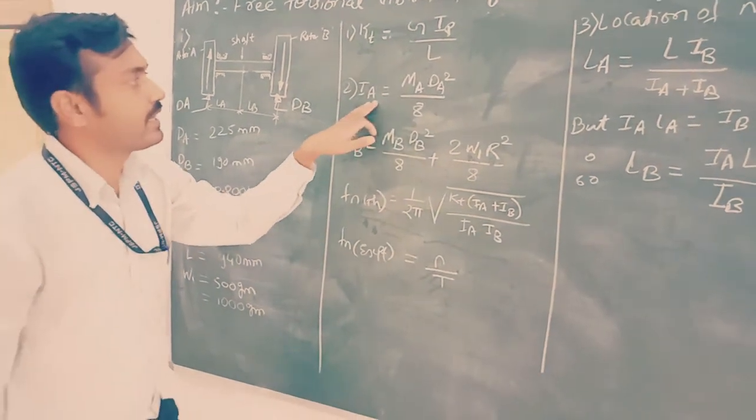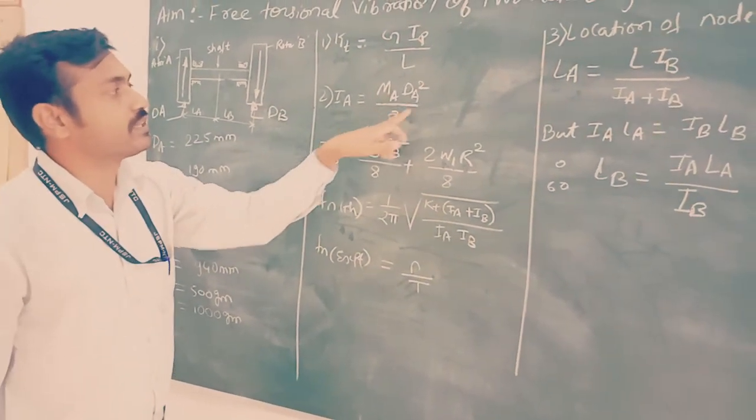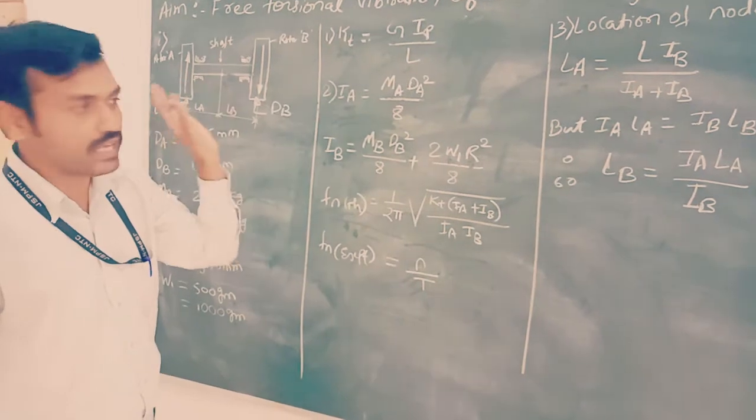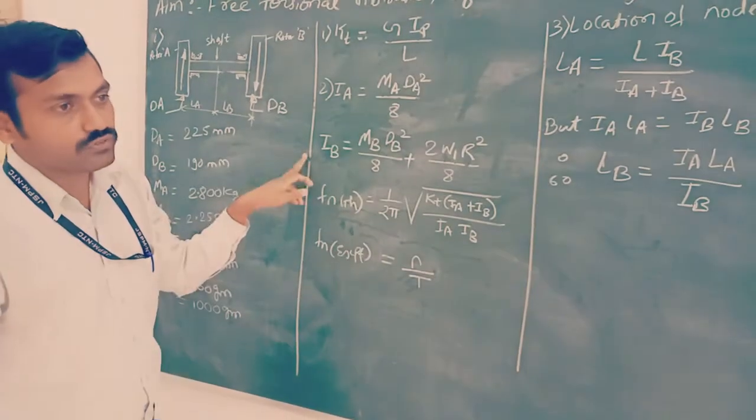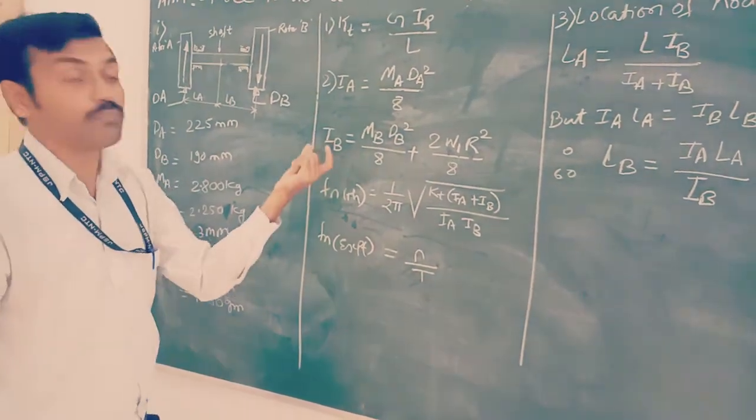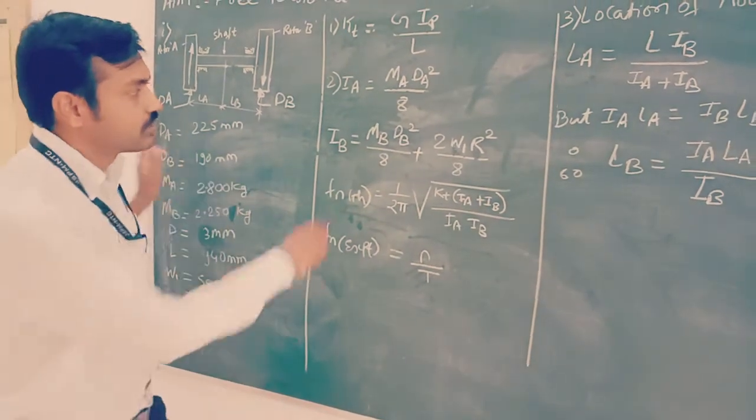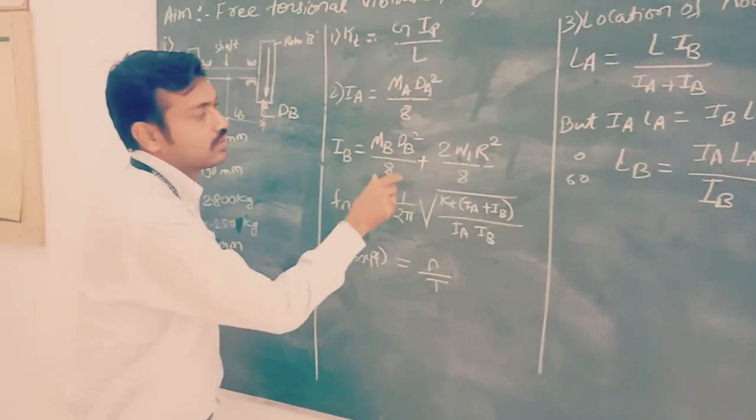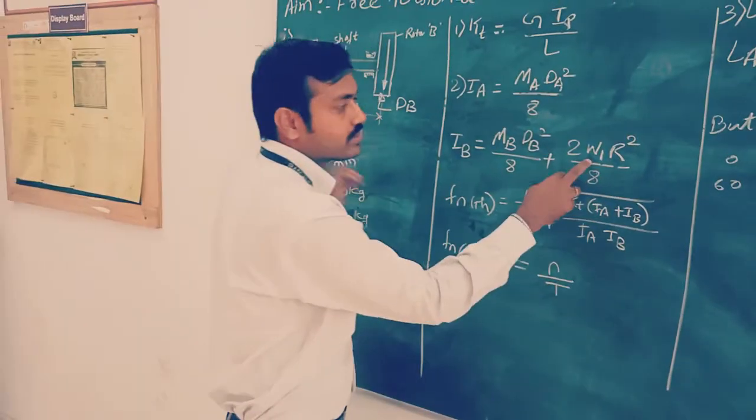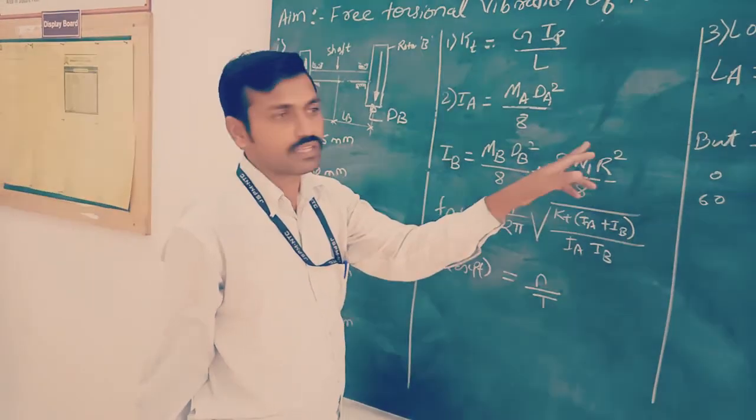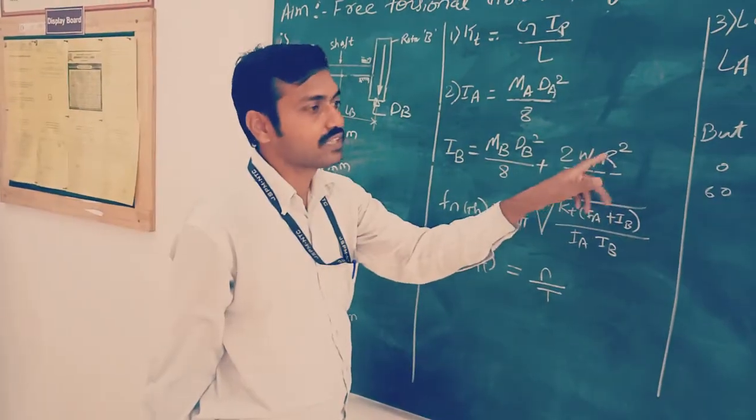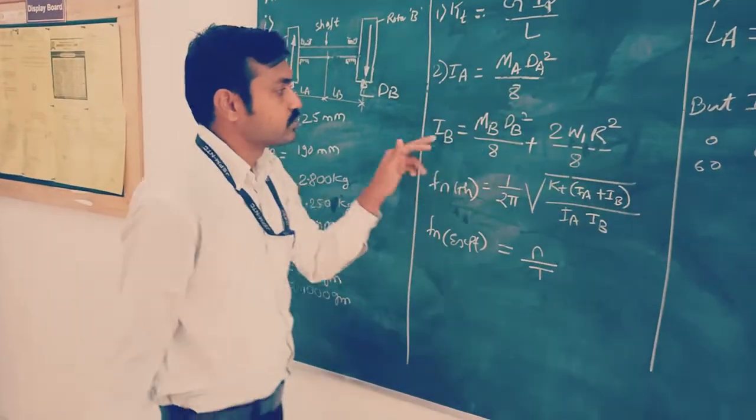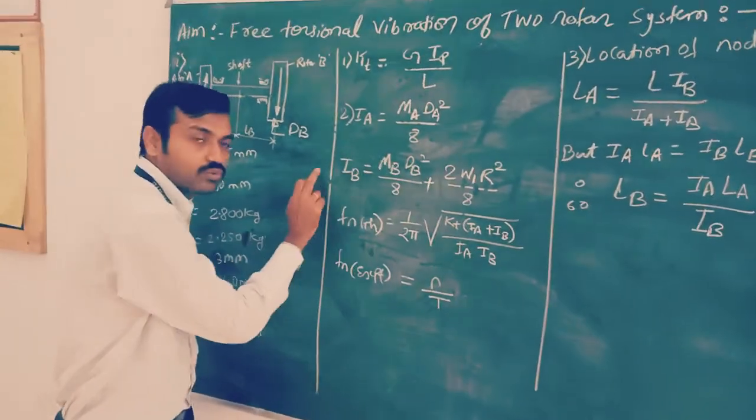After that we have to find out the mass moment of inertia. Ia is calculated from Ma times Da squared upon 8, where Ma is mass of that disk and Da is diameter of disk. This is for mass moment of inertia Ia. So from this we have to calculate Ia.